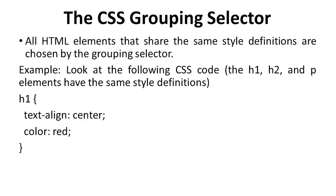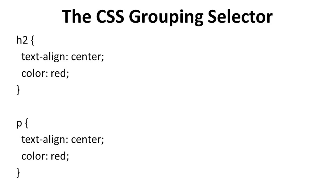The CSS grouping selector selects all HTML elements that share the same styles. For example, in this CSS code, the H1, H2, and P elements have the same style definition. In H1, text-align is centered and color is red. In H2, text-align is also centered and color is red. In P, text-align is centered and color is red.